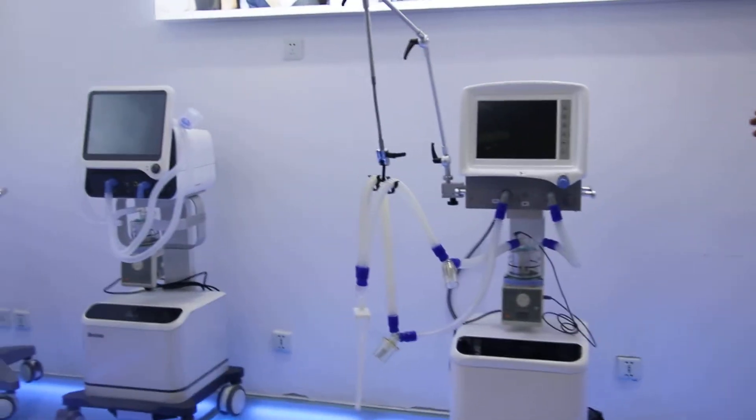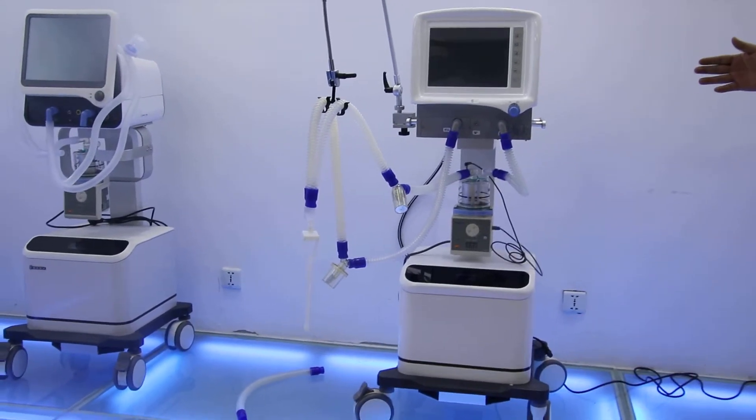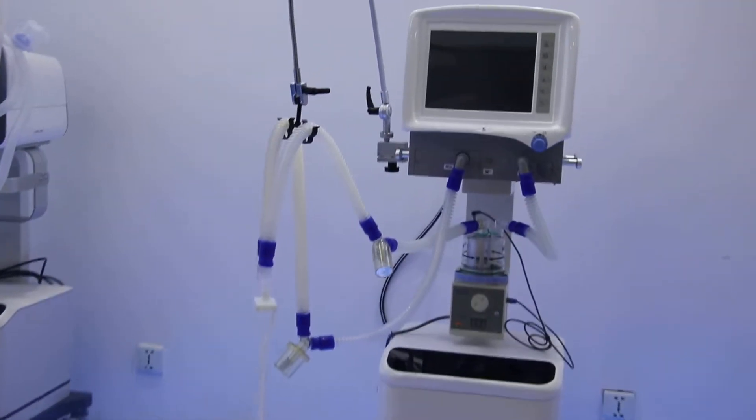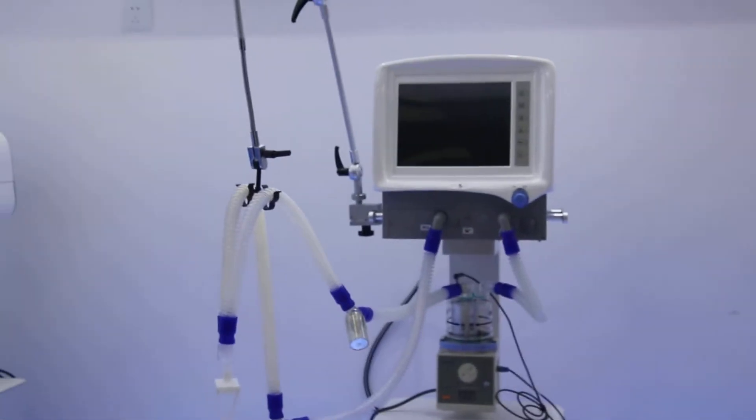Also we have the reusable pipe lock for adults and also for children. If you want to use it for neonatal, we have the spare parts for you. And then we have the breathing bag. Now let's turn on the machine and you can check the details.